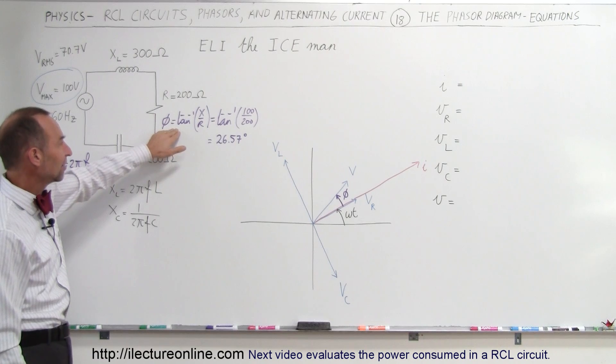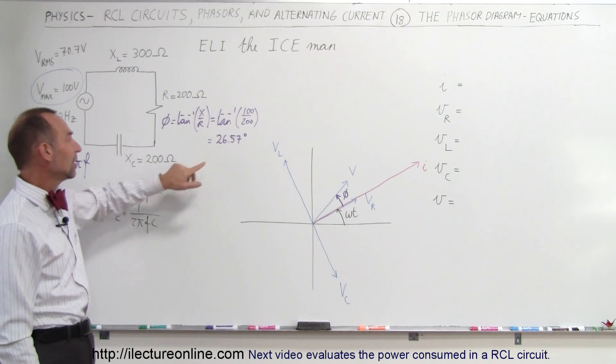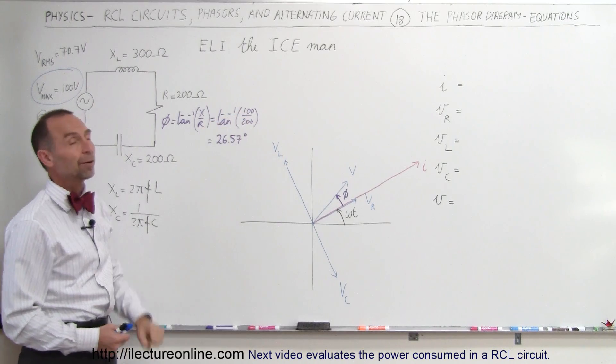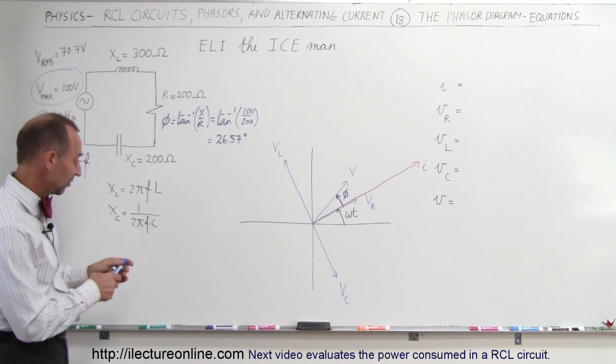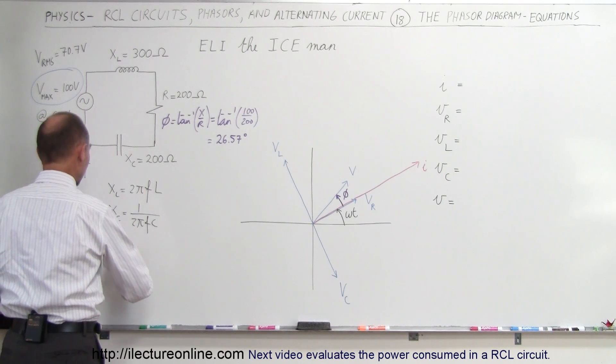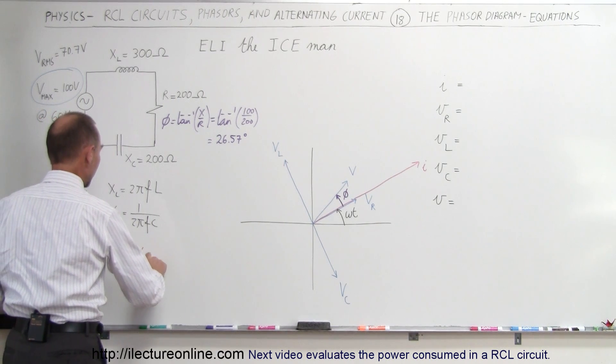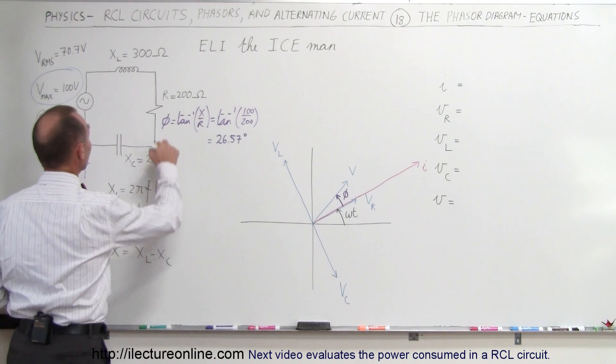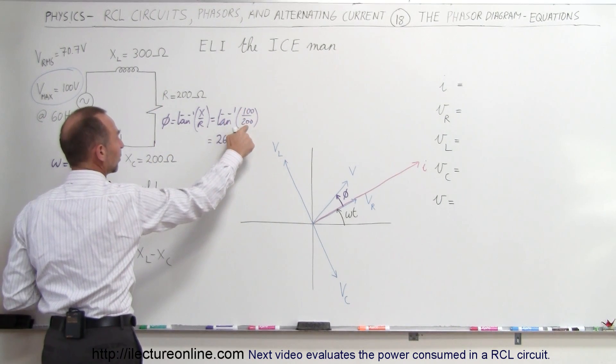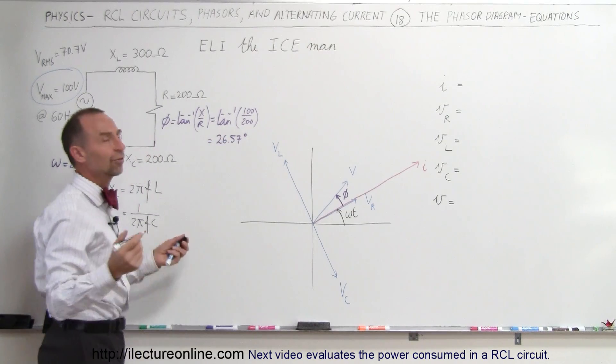We have a phase angle of 26.57 degrees based on the fact that it's the arc tangent of the reactance divided by the resistance. Remember the reactance X, that's the total reactance, is simply equal to X sub L minus X sub C. So in this case it would be 300 ohms minus 200 ohms gives us 100 ohms divided by the resistance of 200 ohms, and that gives us the phase angle.